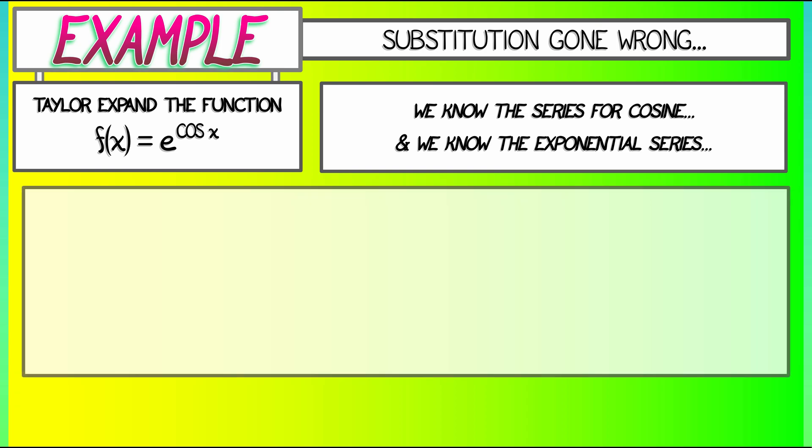So, what do we do? e to the cosine of x is what? Well, I have to exponentiate cosine, but I know what cosine is. One minus x squared over two factorial plus x to the fourth over four factorial. Keep going, keep going.